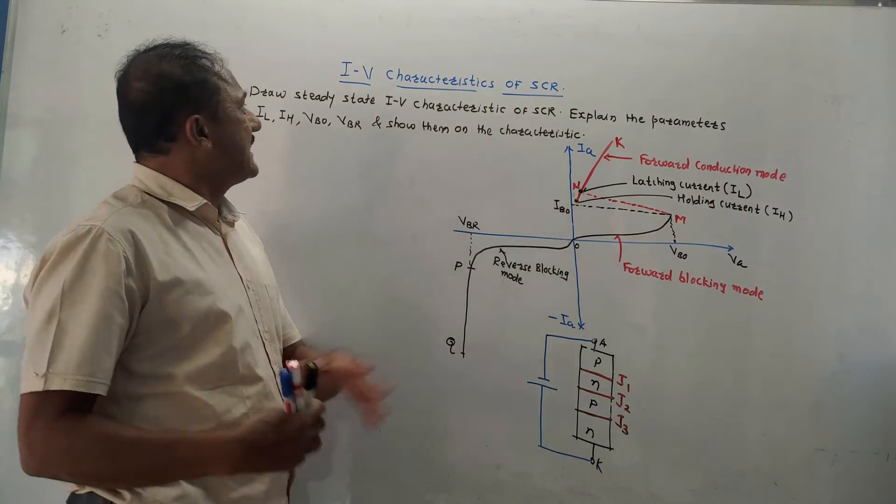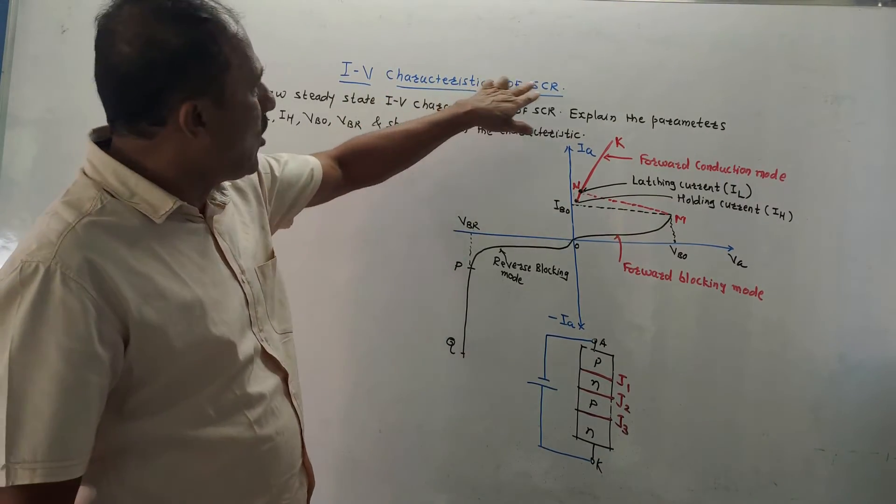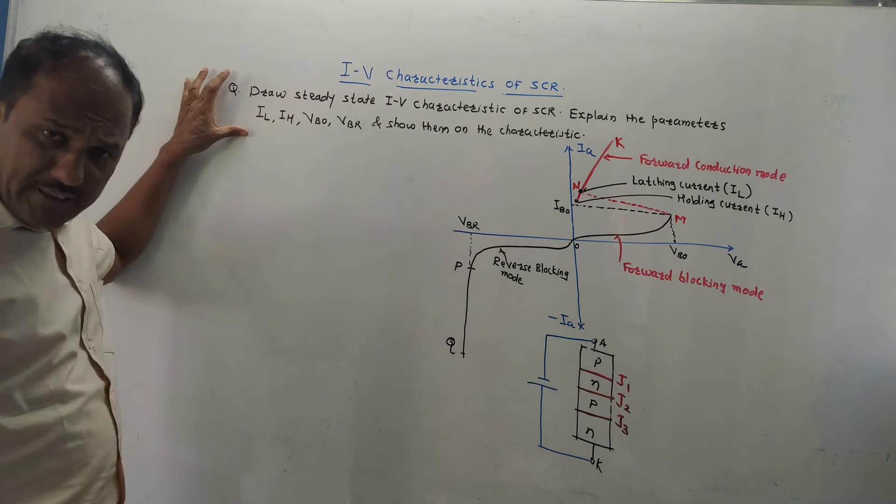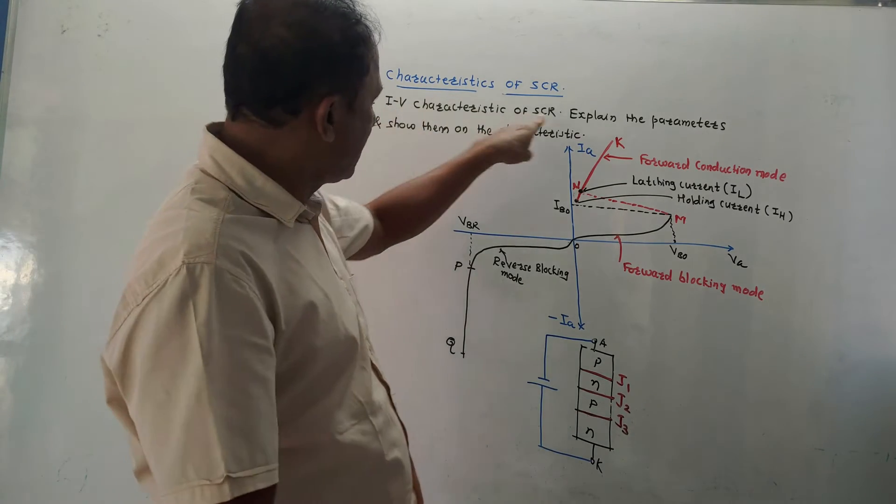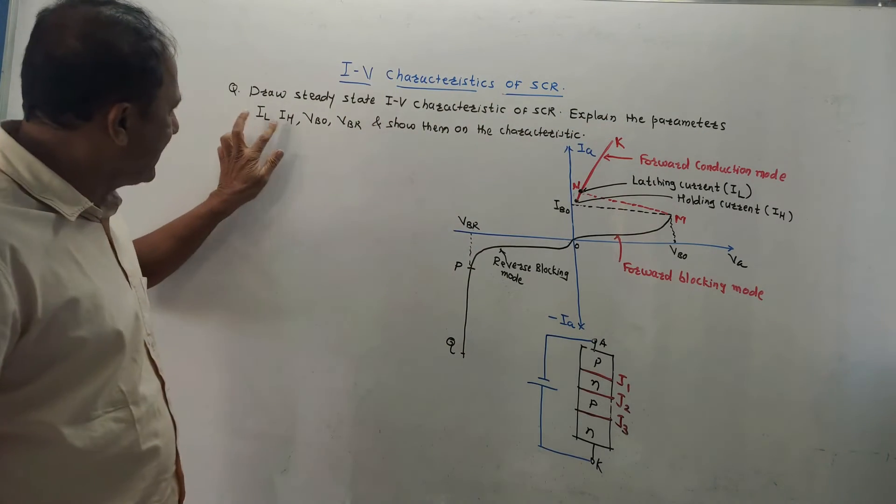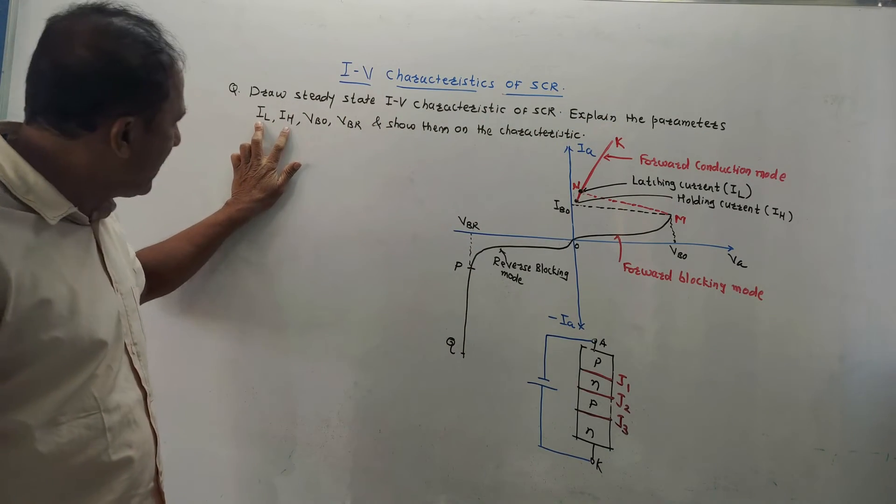The next most important part is static I-V characteristics of SCR. The expected question is draw steady state I-V, that is current voltage characteristics of SCR. Explain the parameters ILIS, that is latching current, holding current.